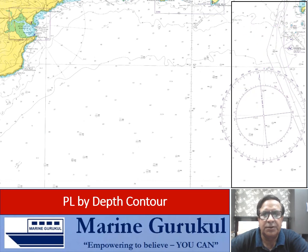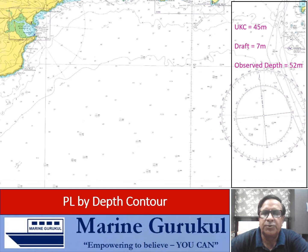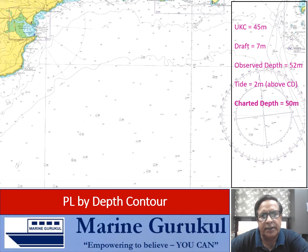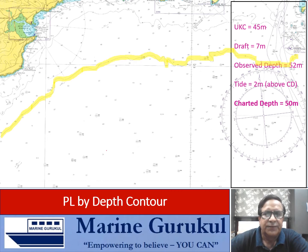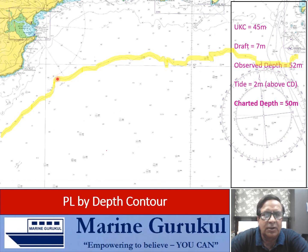First and foremost we convert the given depth to charted depth. UKC = 4.5 meters, draft = 7 meters, giving us an observed depth of 11.5 meters — wait, the echo sounder gives 45 meters UKC with 7 meters draft, so observed depth = 52 meters. Tide is 2 meters above chart datum, so the charted depth at that time is 50 meters. That means the vessel is somewhere on the highlighted 50-meter depth contour, and this depth contour now acts as a PL.